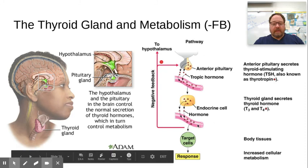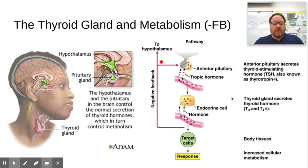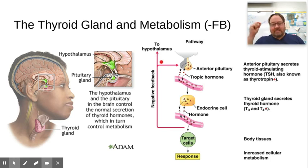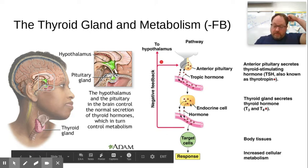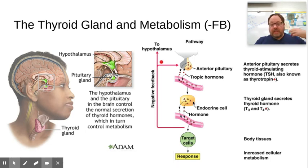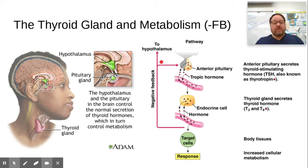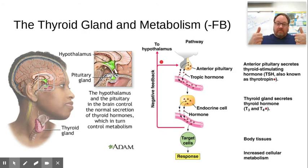Sometimes people have thyroid conditions like hyperthyroidism or hypothyroidism. One thing that can happen is the immune system attacks the tissue in the thyroid gland. When the immune system attacks that tissue, it causes inflammation and an overproduction of T3 and T4. The thyroid gland will overproduce these hormones, making the body warmer and increasing metabolism.